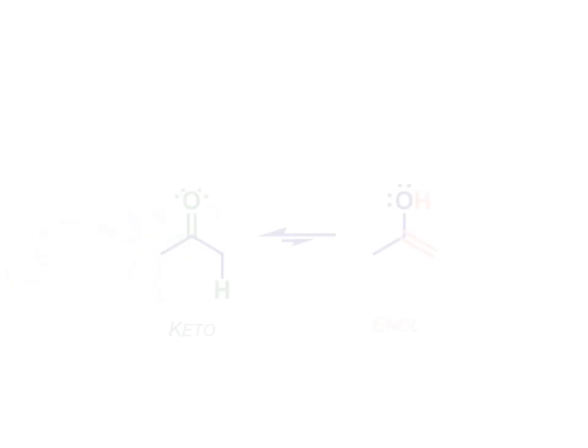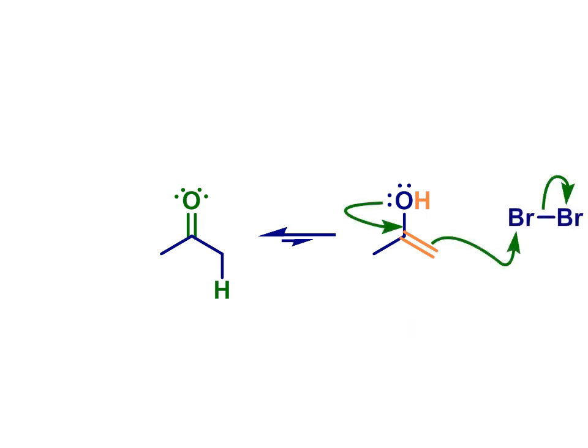We're getting accustomed to the idea that many carbonyl compounds have this double life as an enol, a structural isomer called a tautomer which looks like this and reacts like this, as a nucleophile via its alpha carbon with electrophiles like bromine and alkyl halides.